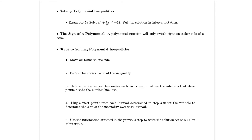First, move all terms to one side. So x squared plus 7x plus 12 is less than or equal to zero. Number two says factor the non-zero side of the inequality. This factors into x plus 3 times x plus 4.